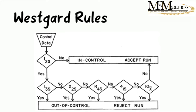Let's say you read your QC sample and get a number. You ask yourself: is this number outside my 2S control limit — your 2 standard deviation limit? If no, it means it's within the 2 standard deviation limits, and you can report the run — you accept those results.